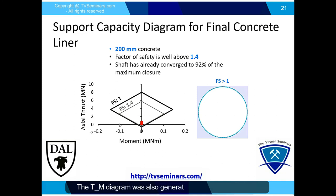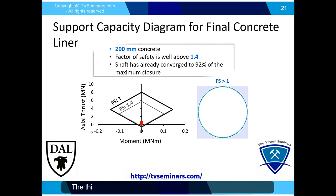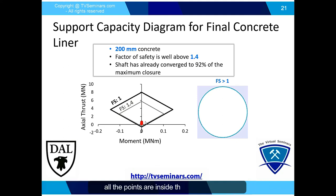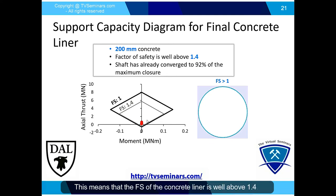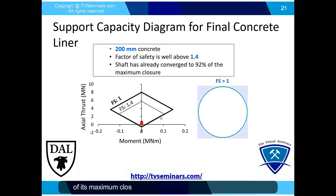The thrust-moment diagram was also generated for the concrete liner with a thickness of 200 mm. Based on the diagram, all points are inside the gray diamond, meaning the factor of safety of the concrete liner is well above 1.4. This is expected since the shaft has already converged to about 92% of its maximum closure based on the GRC and LDP analysis.